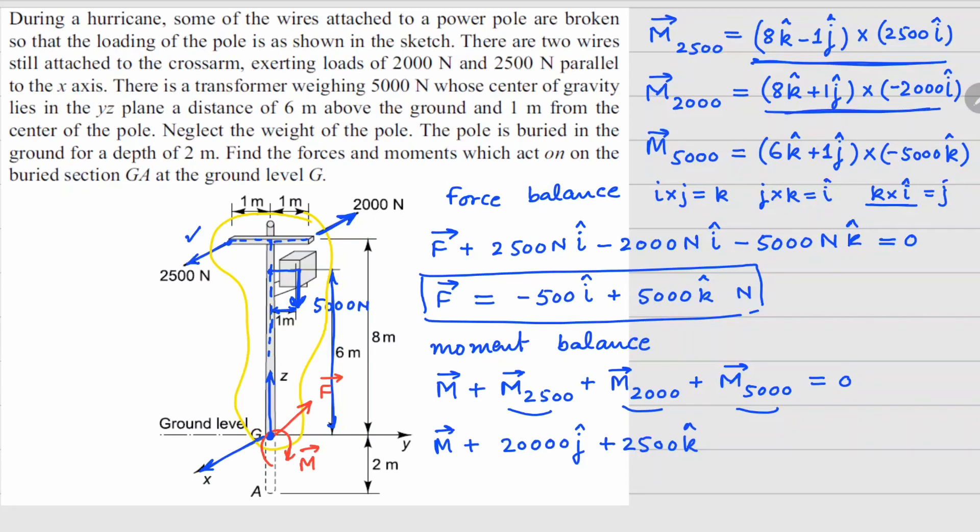Similarly, this one right here, k cross i is j. So it's going to be minus 16,000 j cap, k cross i. And then j cross i is going to be coming from here. There's a minus sign there. So it becomes plus. So it's going to be 2000 k cap.